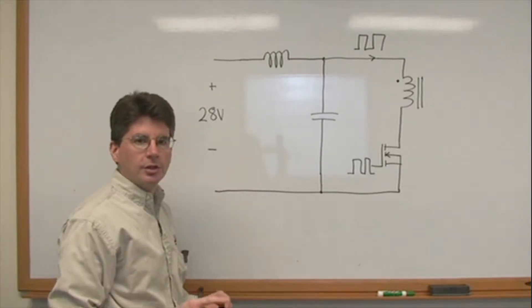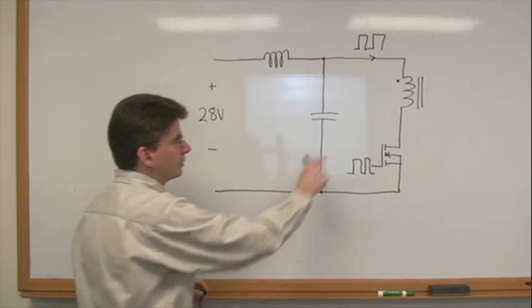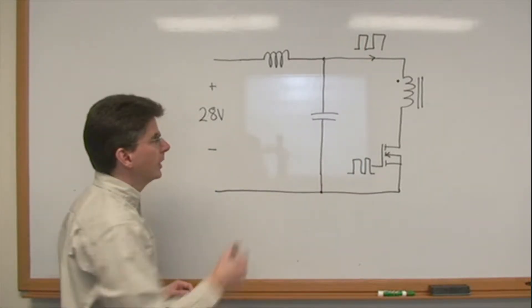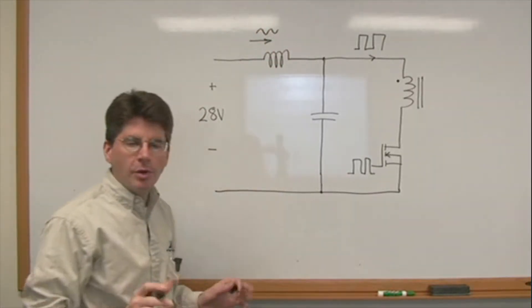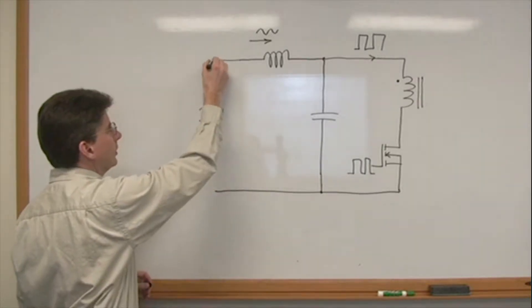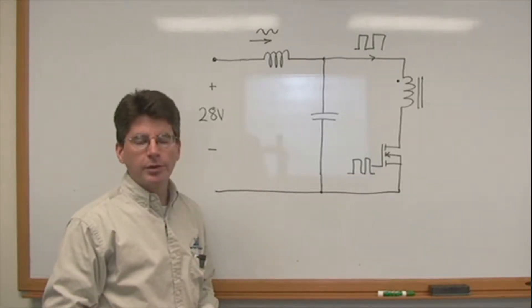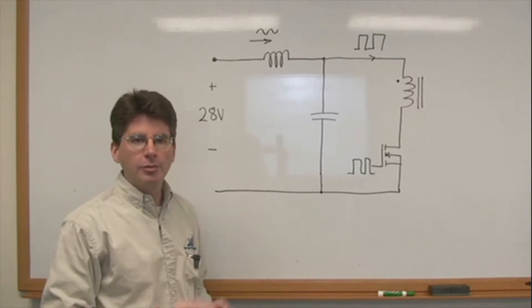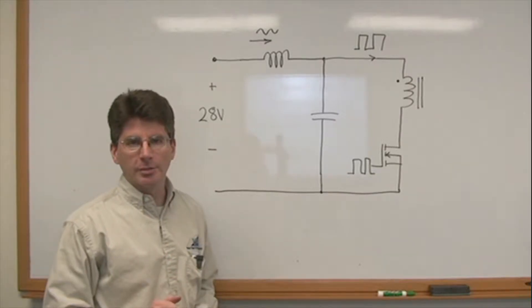VPT's converters include some sort of LC or even two-stage LC input filter which will reduce this large pulsating square wave current. This current here will be a small sinusoidal type ripple, but this will appear on the input line and go back into the system. So this is what we refer to as conducted emissions. Additional filtering will be needed to make this meet a MIL-STD-461 limit for conducted emissions.